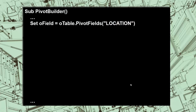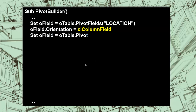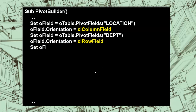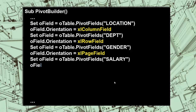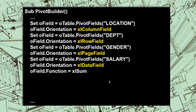Now we set O Field to one of the pivot fields in the collection called Location — that is the label of the column — and we make sure that it ends up in the column field in the pivot table. We do something similar for the field Department, which we set to the row field. We also add the Gender field, but this time as a filter — as an Excel page field — so we can filter for females, males, or whatever. Finally, we determine the field to calculate: Salary. That's the data field.